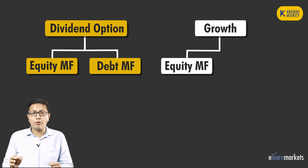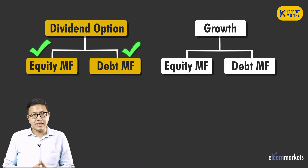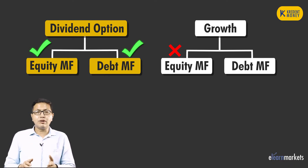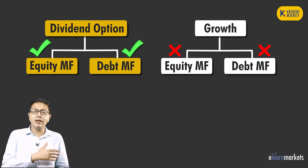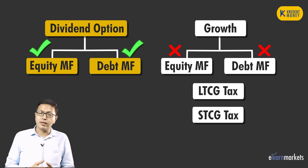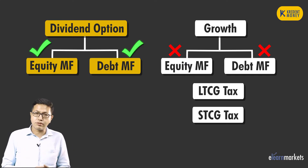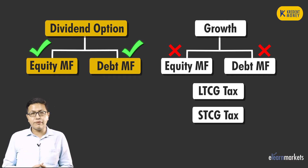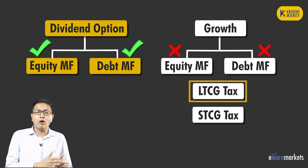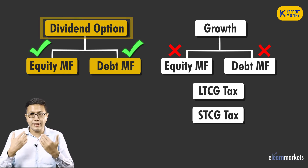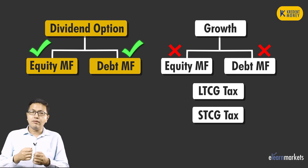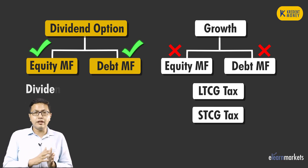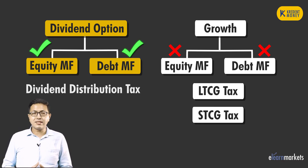Whatever tax rates are explained, these are applicable only to the dividend option of an equity or a debt mutual fund scheme — they are not applicable to the growth option. In the growth option of an equity or debt scheme, we have simple long-term and short-term capital gains tax rules, about which I have already talked in separate videos. So choose your option carefully: if you go for the growth option you will pay long-term or short-term capital gains tax, but if you go for the dividend option these DDT rules will come into picture. I hope you have understood this concept of DDT and how it is calculated. Thank you, see you in the next video.